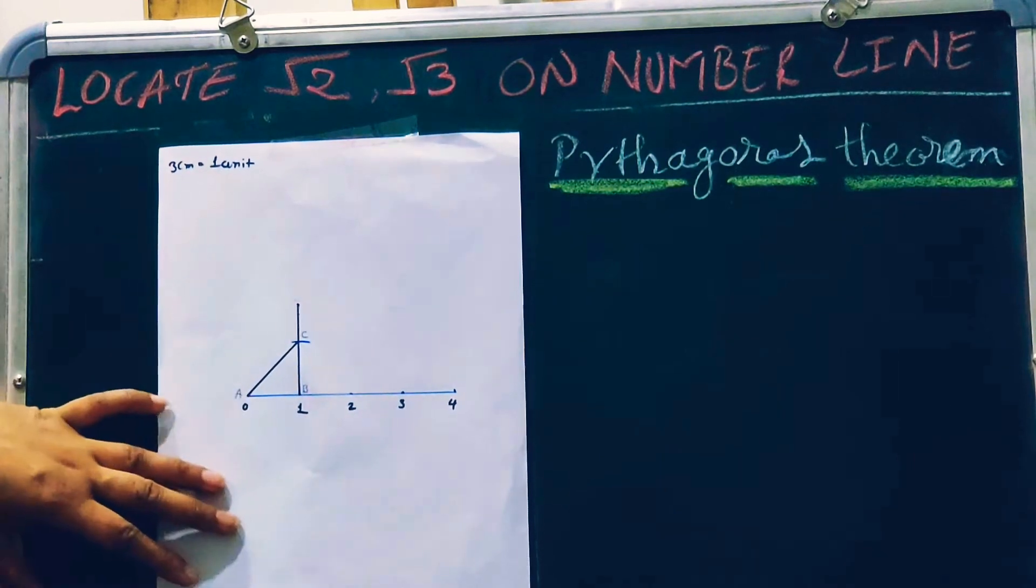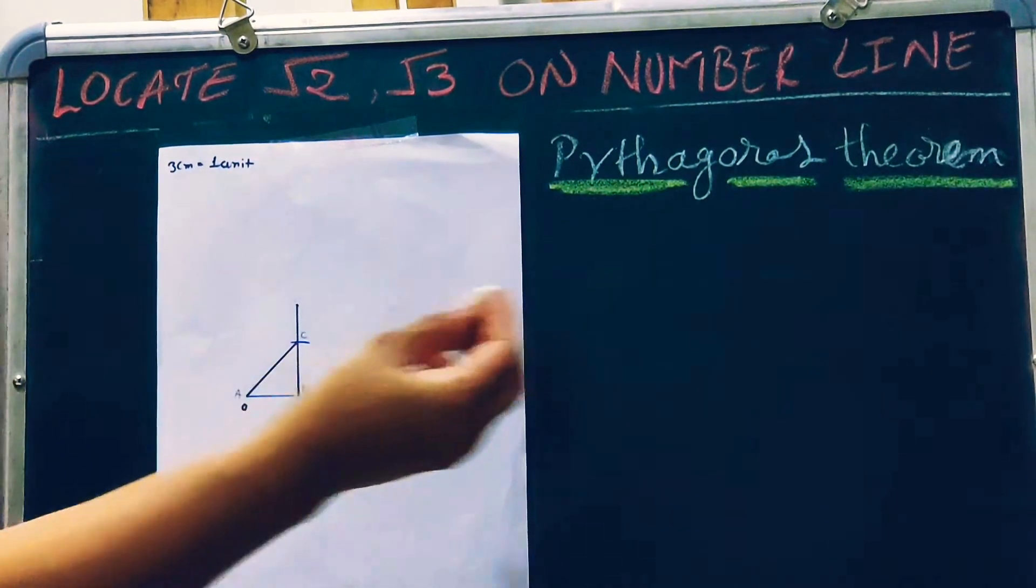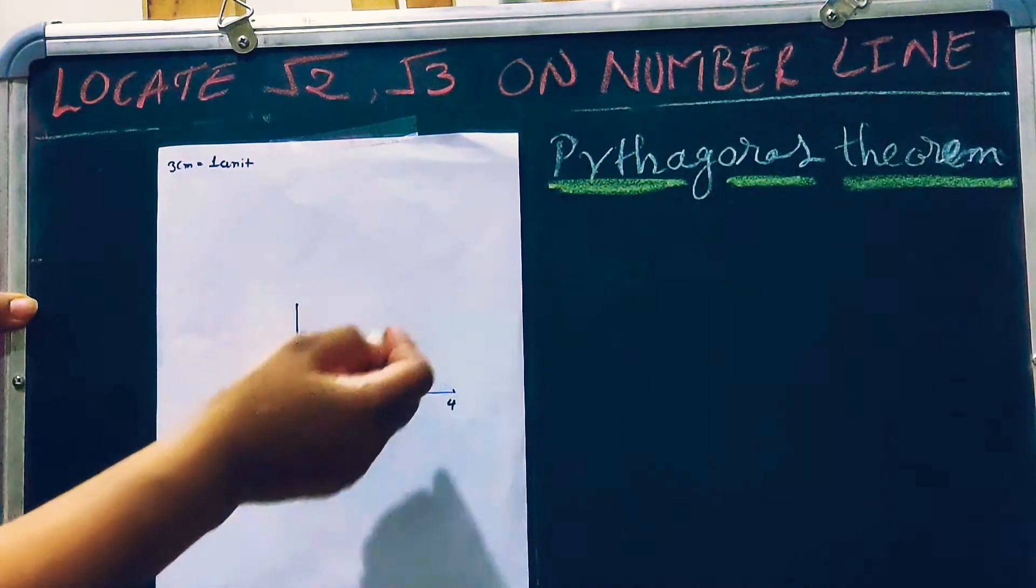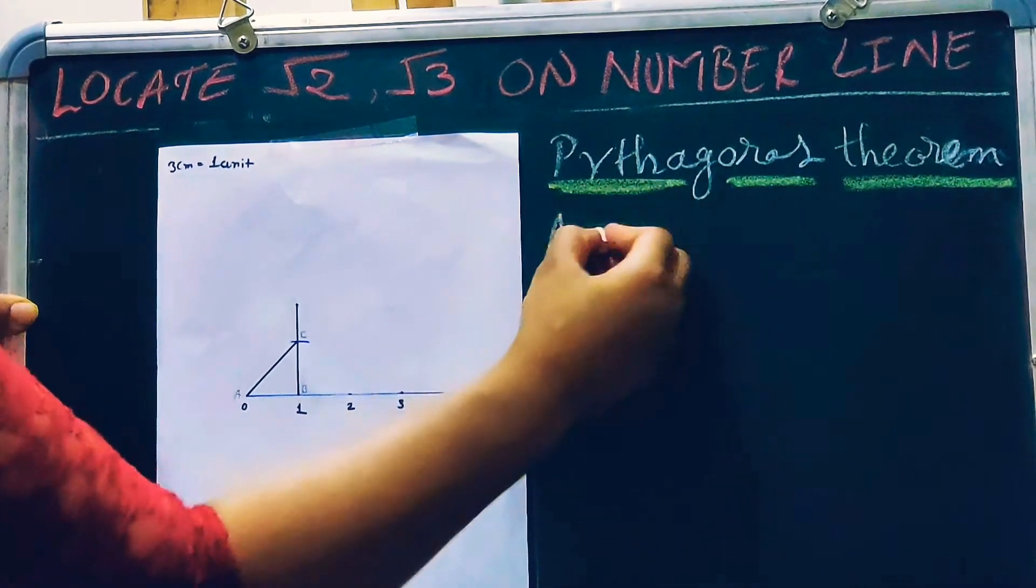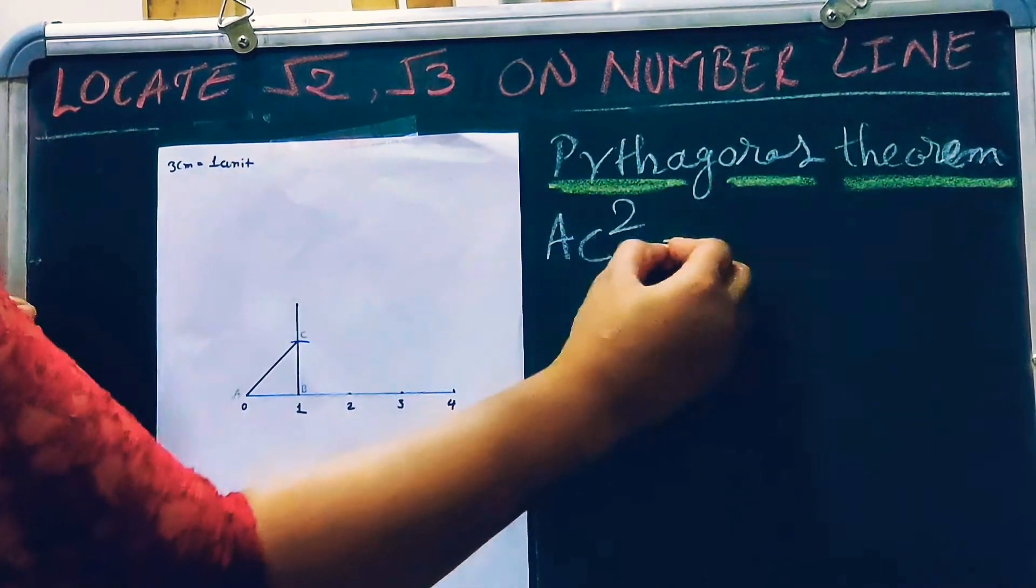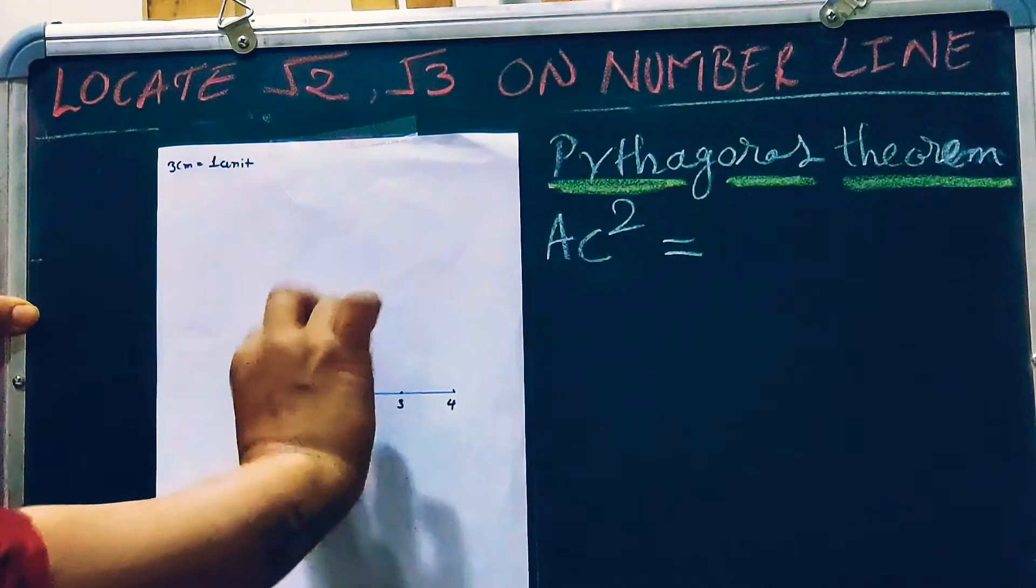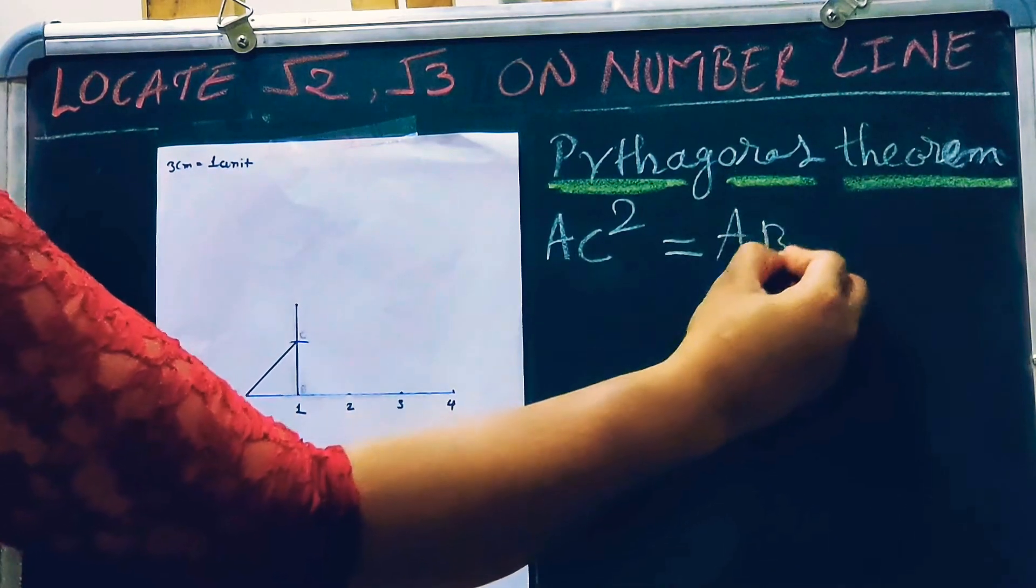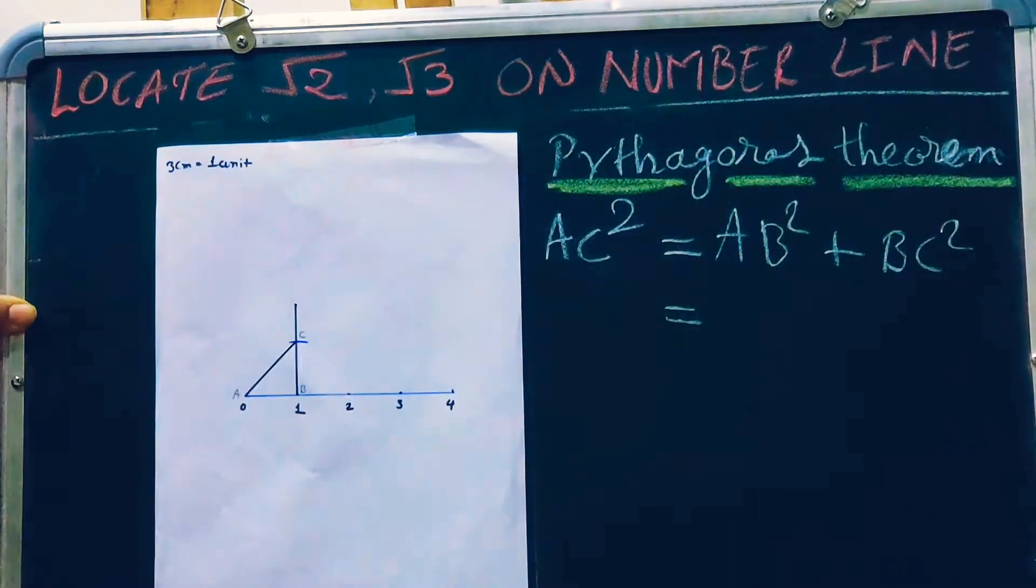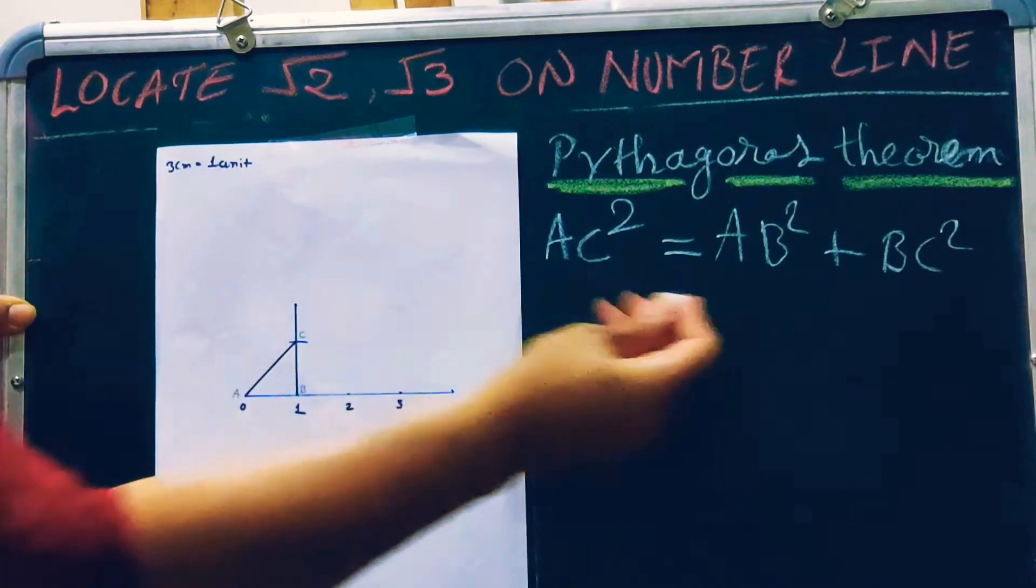What is the length of AC? We can find it with Pythagorean theorem, because this is a 90 degree right angle triangle. According to Pythagorean theorem, AC square means hypotenuse square is equal to AB square plus BC square. Here, AB is equal to 1.